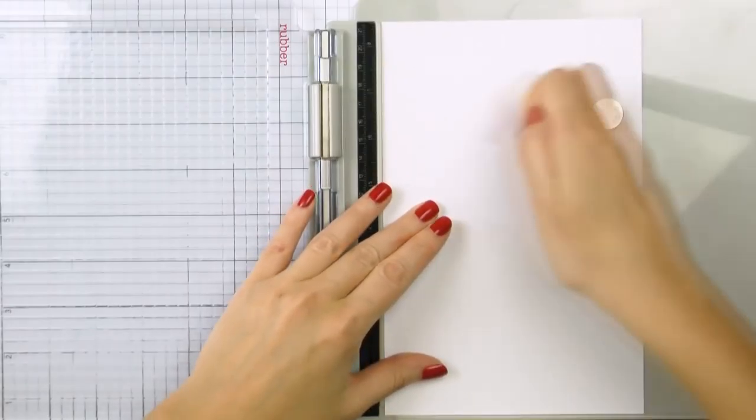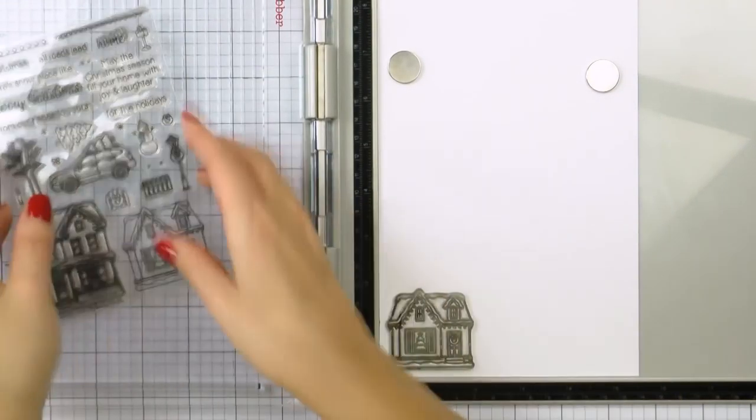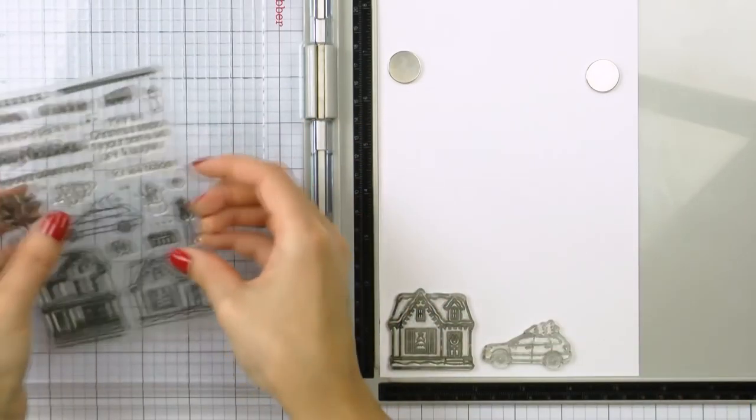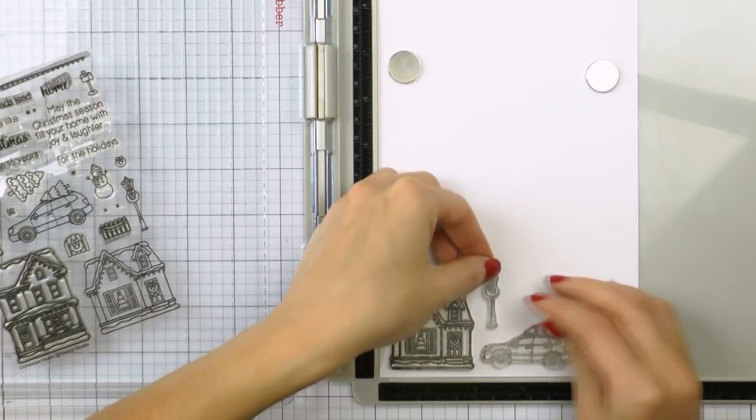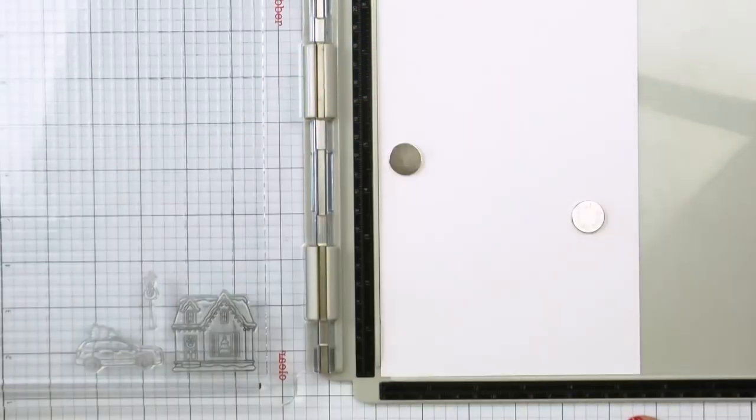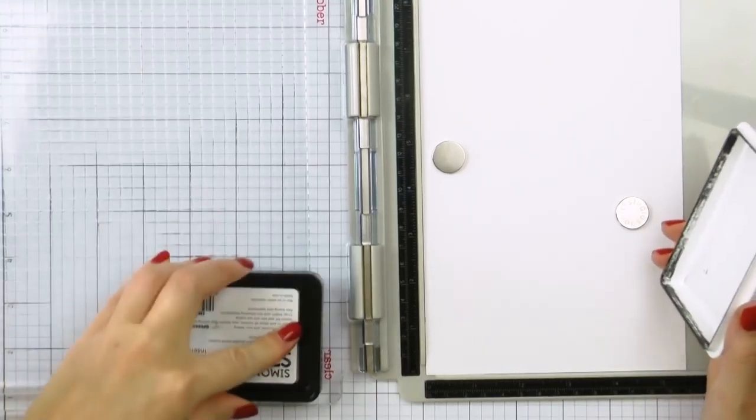I started working on my card by stamping several images from this stamp set onto white cardstock. This is Neenah Solar White 80 pound. I picked thinner cardstock and not the usual 110 pound cardstock for my stamping because I was planning to cut these images out by hand, and if you use thicker cardstock it makes it rather difficult to cut.